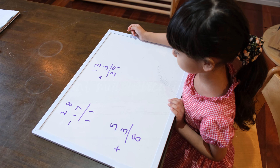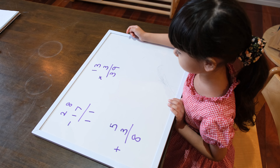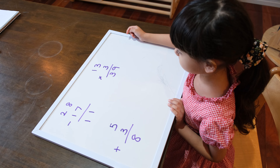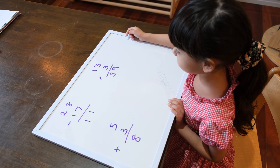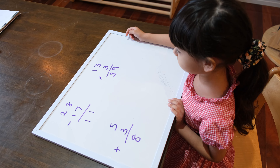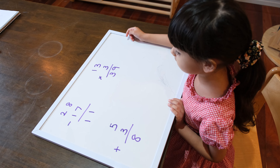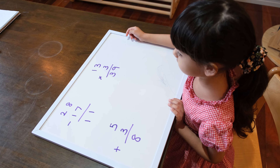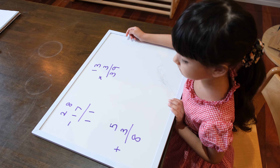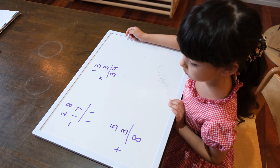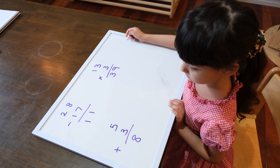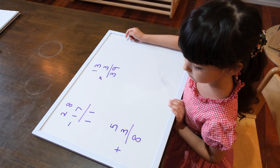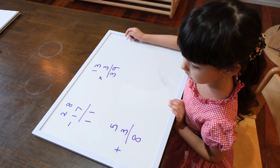So in a multiplication equation, what do we call the answer? Product. What do we call the top factor? Multiplicand. That's right. And what do we call the second factor? Multiplier. That's right. And then in an addition equation, what do we call the answer? Sum. And what do we call the parts? Addends. That's right.